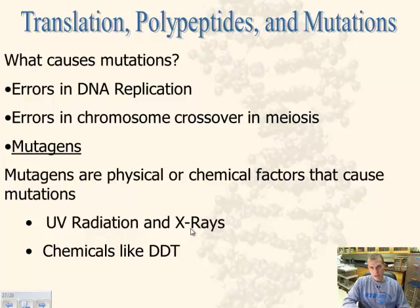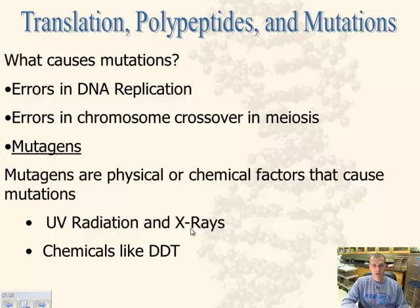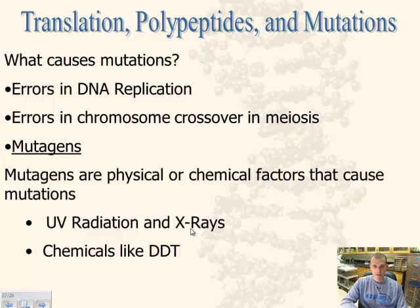How a mutation affects you and whether you pass it to offspring depends on its location. If it's in a somatic cell — your body cells — those will not be passed on to your offspring. But if the mutation occurs in the gametes or your sex cells, those can be passed along to your offspring.